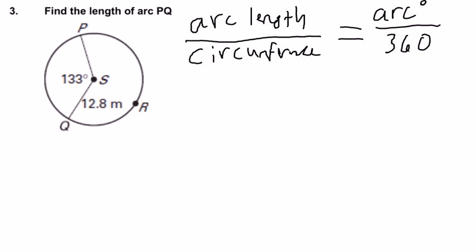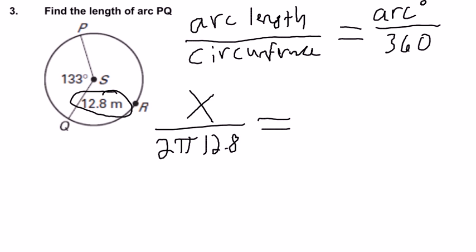So to find the length of the arc, we don't know it, I'll call that x. On the bottom find the circumference. Well they give us the radius, so I can use that to find the circumference: 2πr, which is 12.8, so those will multiply by each other, equals. The measure of this arc is 133 degrees, and that's out of 360. So this is how you would have to set it up, and from here we're going to cross multiply.